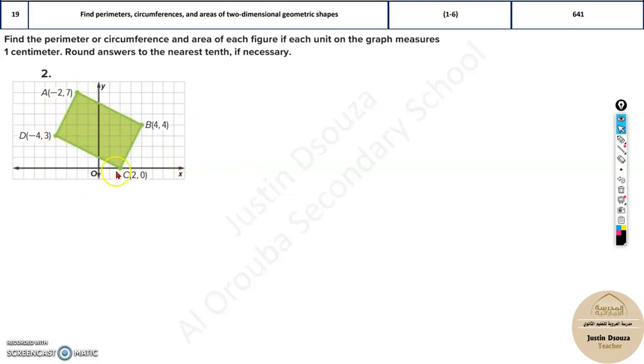Here it is a rectangle. All you need to do is find the distance. You need to just find two distances. Why? Because the opposite sides of a rectangle are equal.